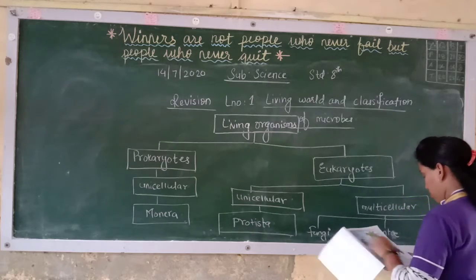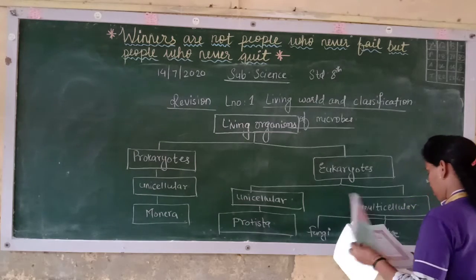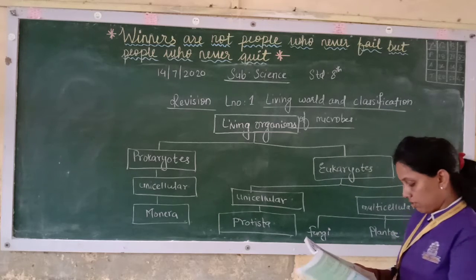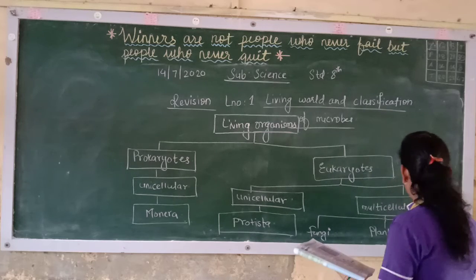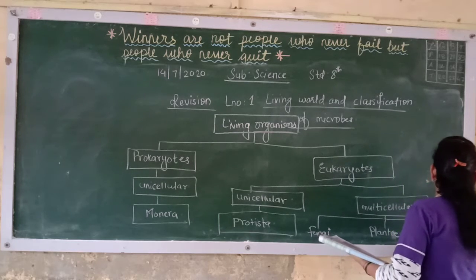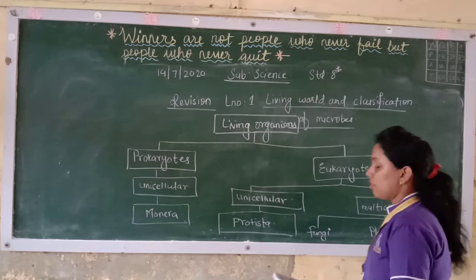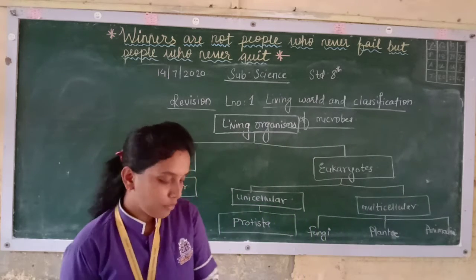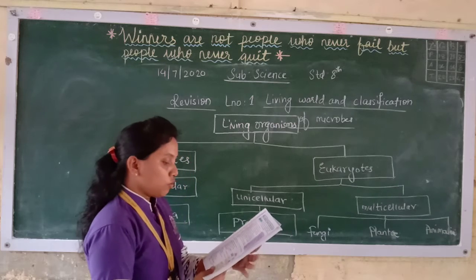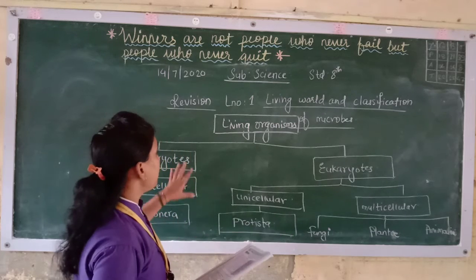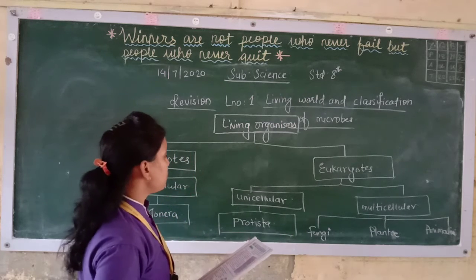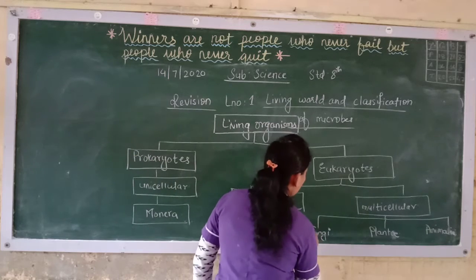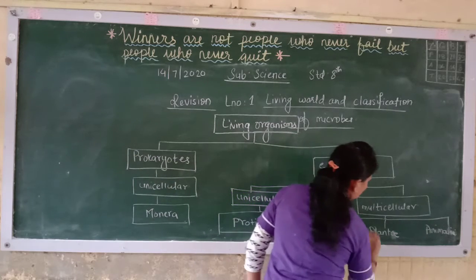So in the earlier class we had seen Whittaker's five kingdom classification. He divided the living organisms into five groups: Monera, Protista, Fungi, Plantae and Animalia.